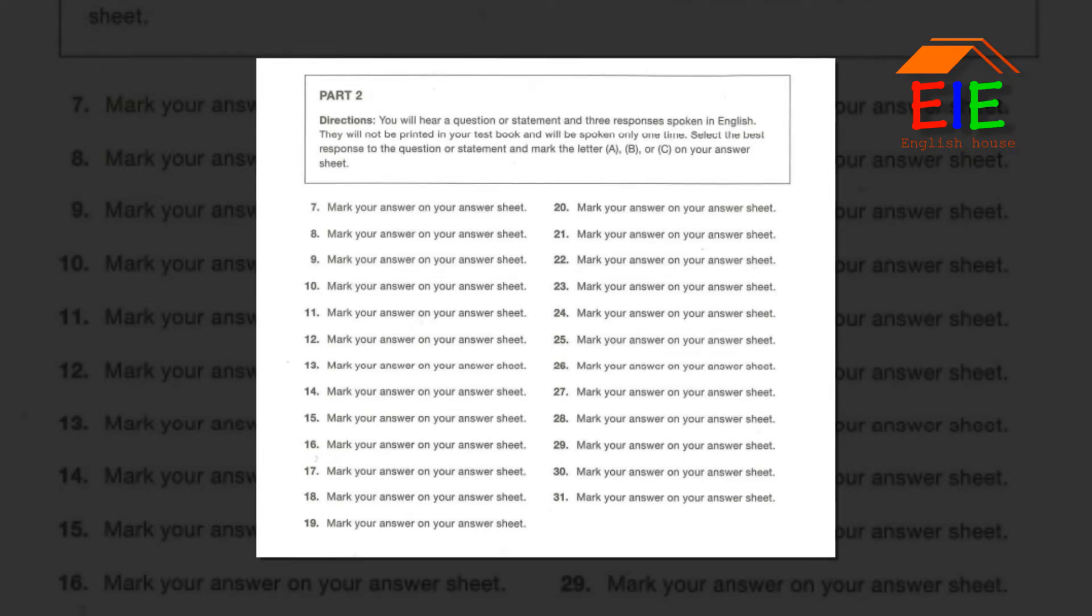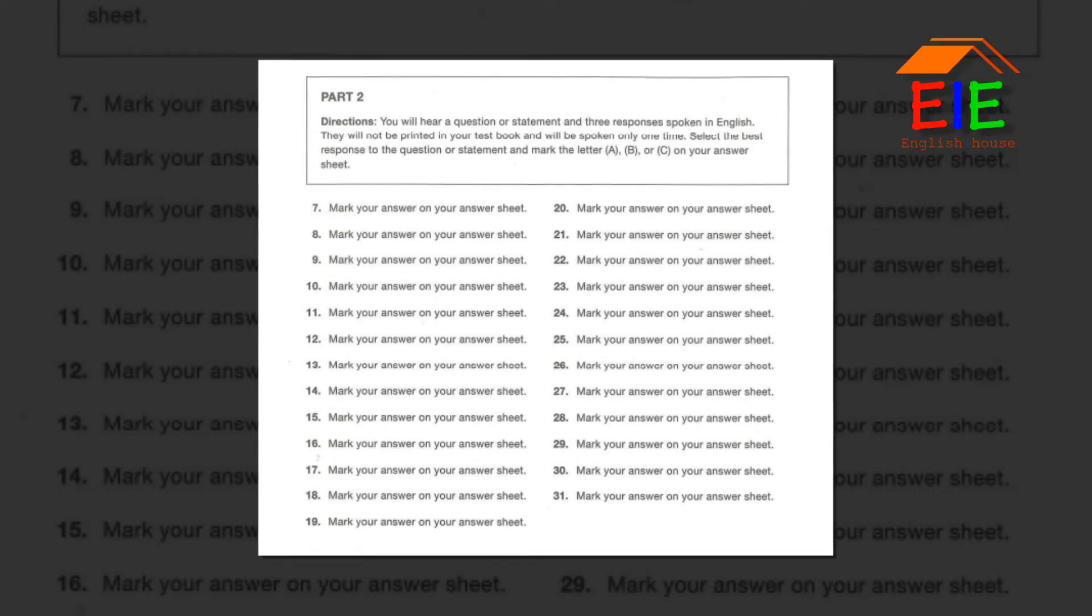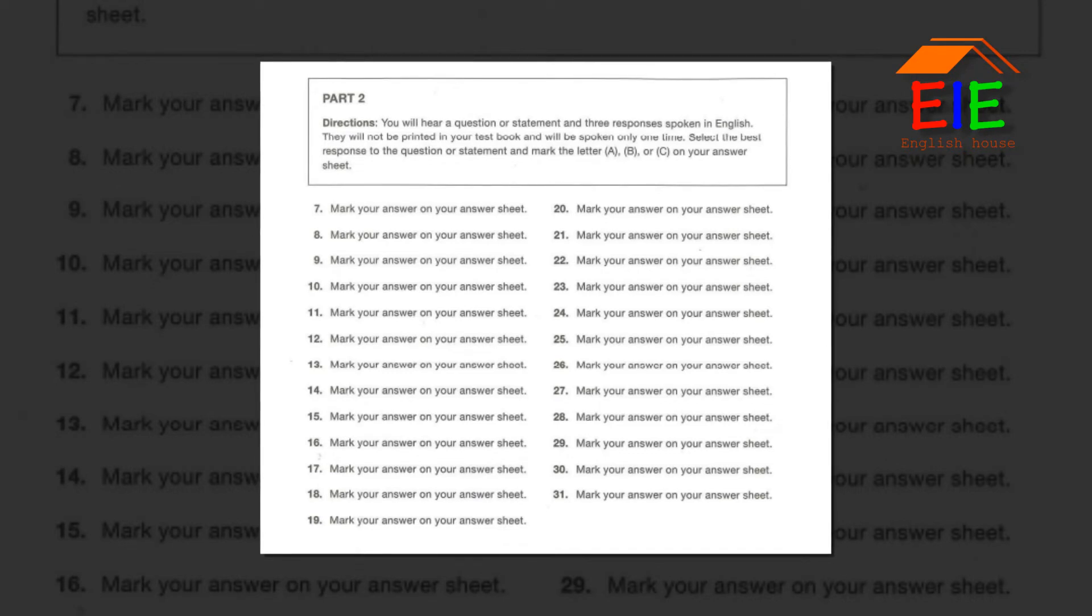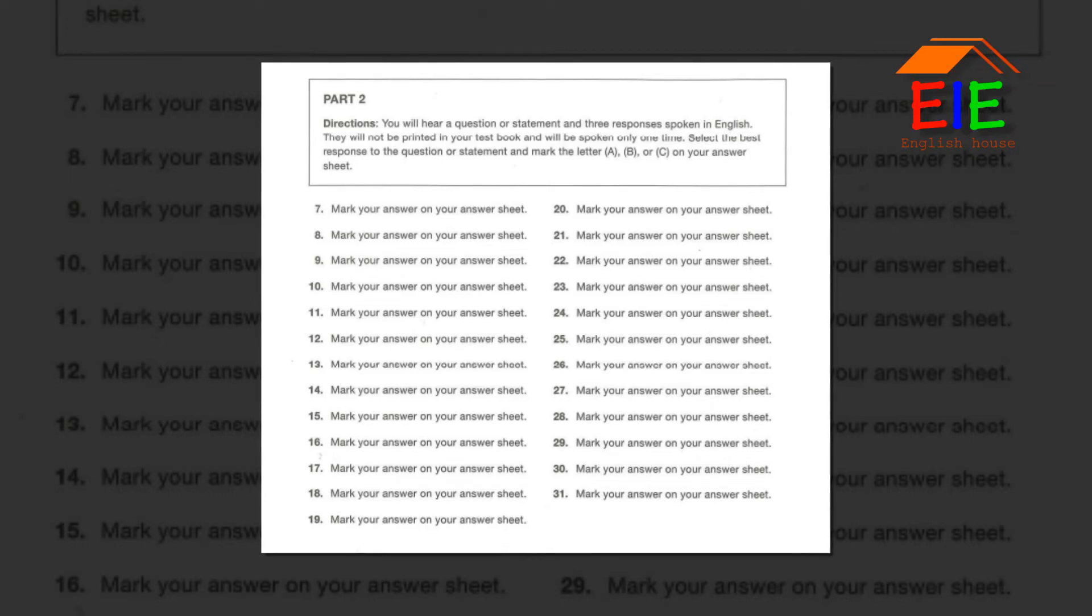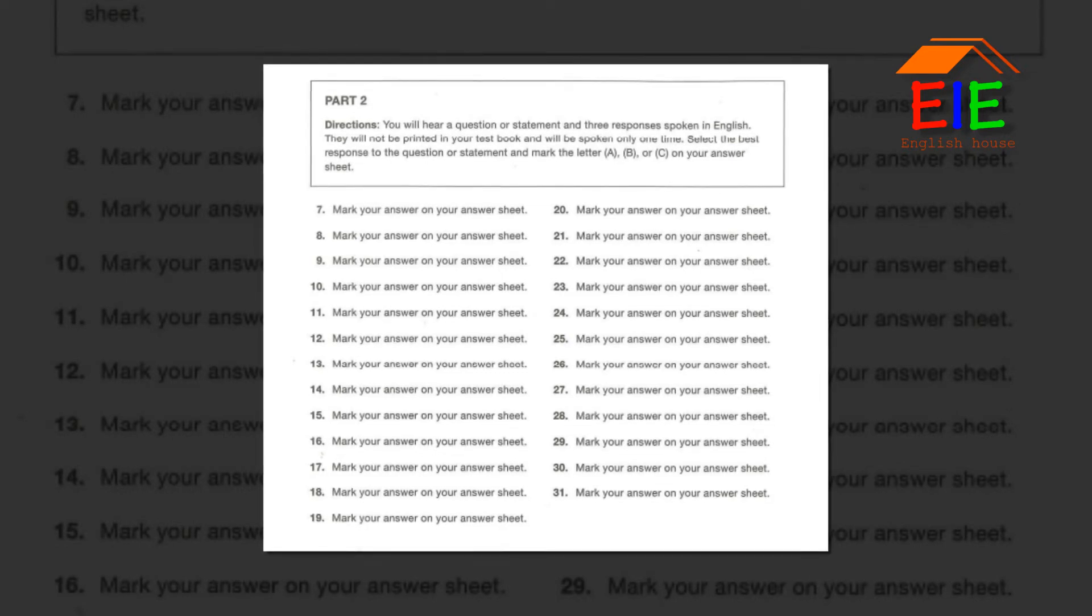Number 18. Where can I find the human resources department? A. Upstairs to the right of the elevator. B. All new employees have to watch it. C. She's been working here for 10 years. Number 19. Who did you speak to about renting the apartment? A. I think it was the property manager. B. On the first of every month. C. There's a part missing.